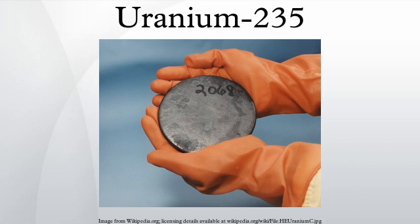Uranium-235 is an isotope of uranium making up about 0.72% of natural uranium. Unlike the predominant isotope uranium-238, it is fissile — that is, it can sustain an efficient chain reaction. It is the only fissile isotope that is a primordial nuclide, or found in significant quantity in nature.